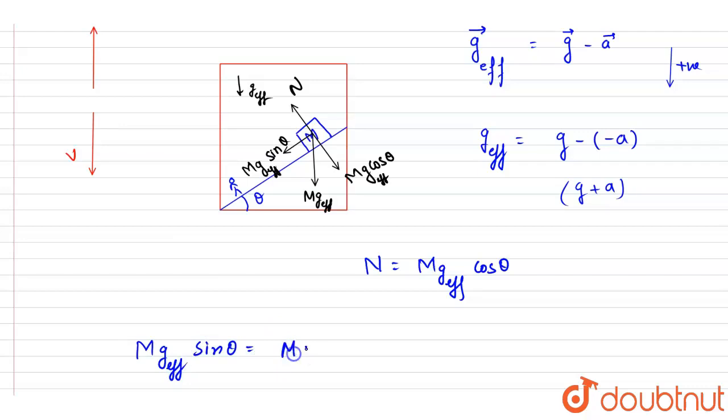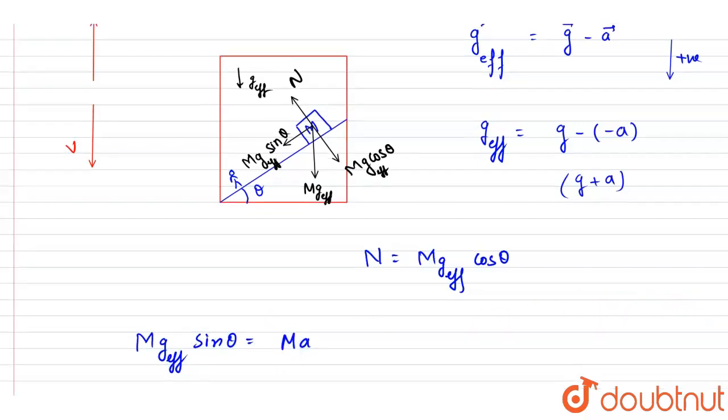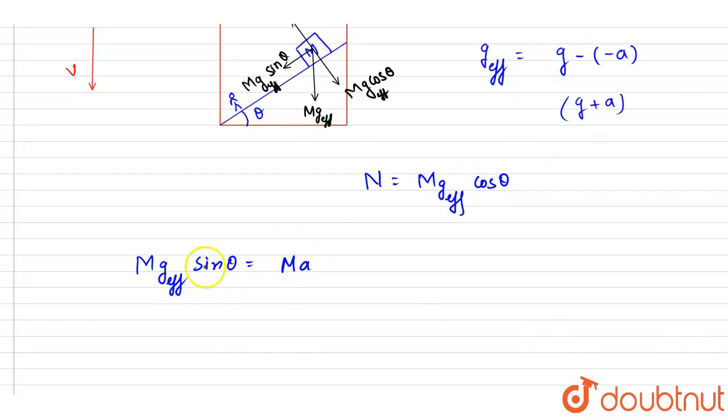This equals mass times acceleration with respect to this frame only. And g effective value you can put, I will write down the final expression: acceleration is (g plus a) sine theta. G effective is g plus a, so this is the acceleration of the block with respect to the frame and answer of this question.